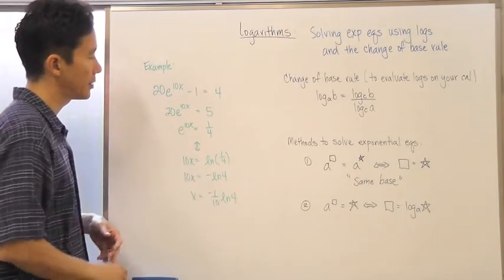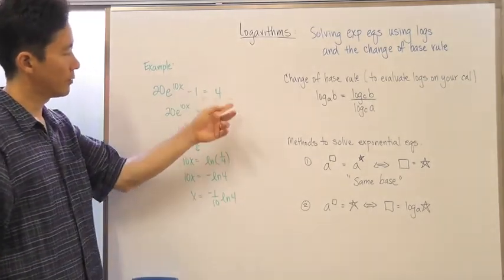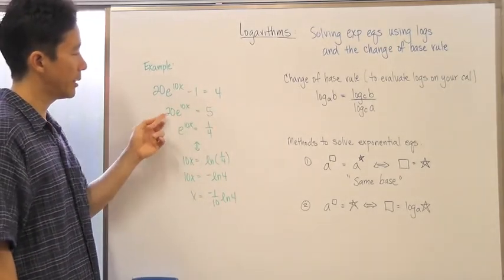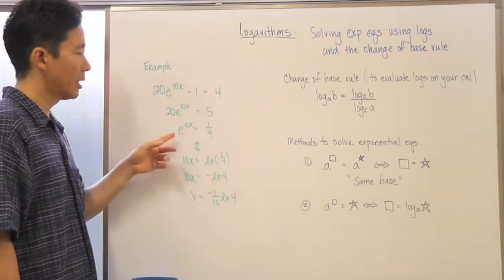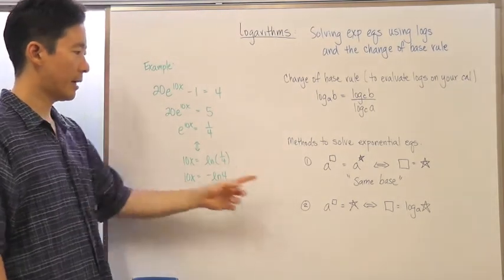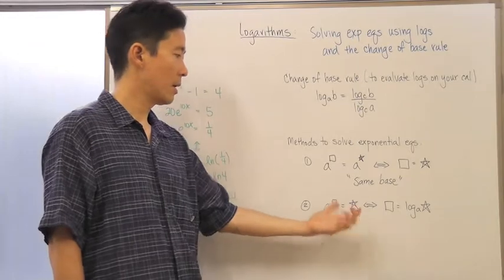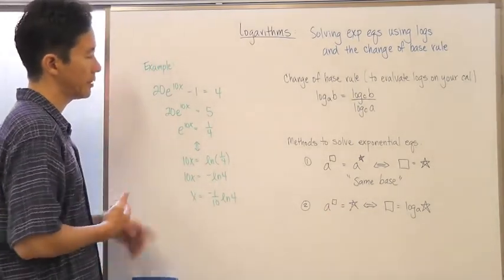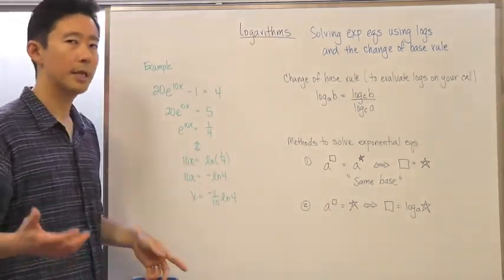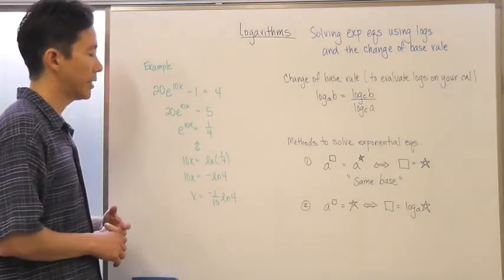So let's solve for e to the 10x first. I move the 1 over and get 5, then divide by 20, I get 1 fourth. Once I get to this step over here,